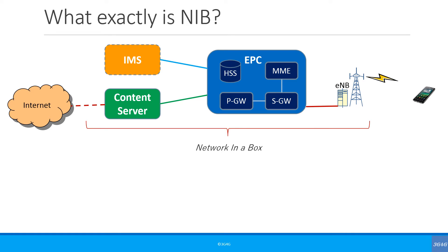So what exactly does NIB comprise of? Here is a simplified diagram. It includes the access network, which is the eNodeB in the case of LTE, and the core, which is the EPC in the case of 4G. The EPC typically consists of the MME, the Serving Gateway, and the PDN Gateway. The HSS, which is the Home Subscriber Server, can be shown as part of the EPC or can be separate.